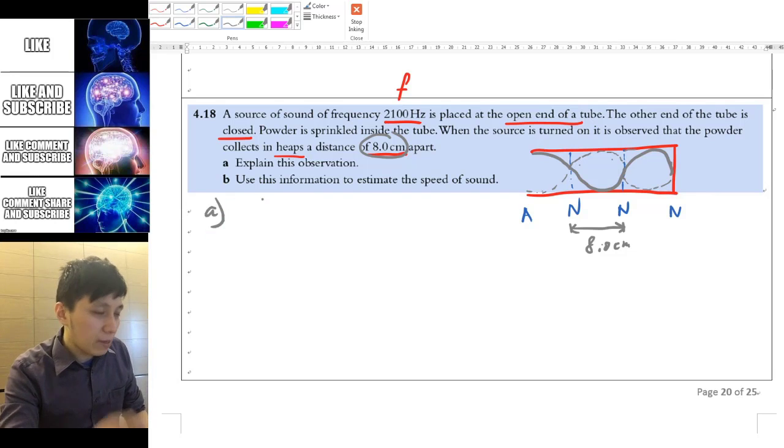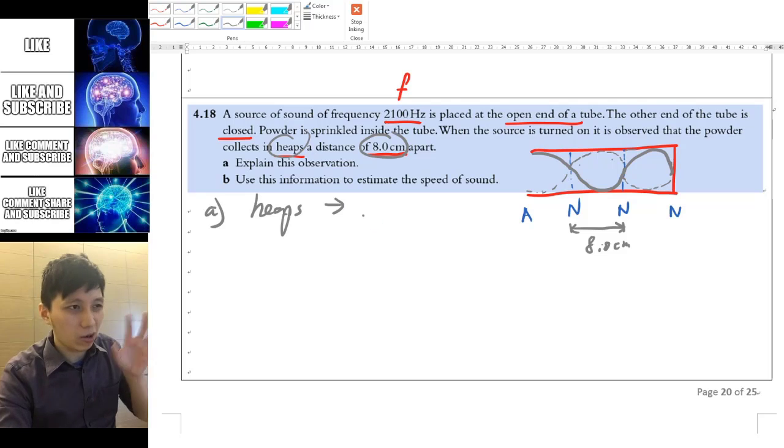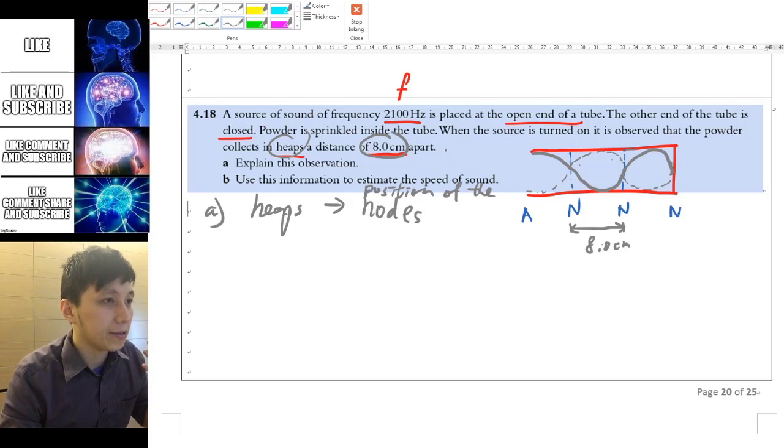So for part A, maybe we can do this first. Of course, explain this observation meaning that for the heaps, you can write the whole sentence. But basically what it means is this is the position of the node and here we have got a standing wave.